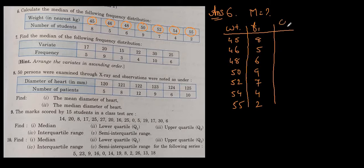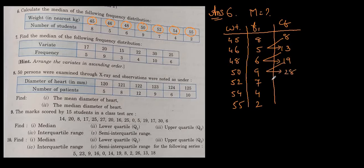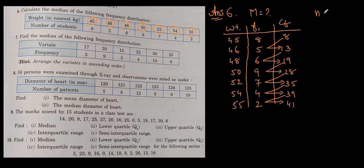Now we have to go for cumulative frequency. So: 8, then 8+5=13, then 13+6=19, then 19+9=28, then 28+7=35, then 35+4=39, then 39+2=41. So here n is equal to 41.